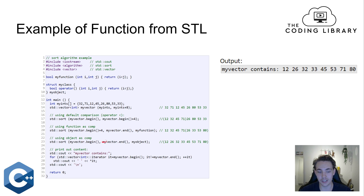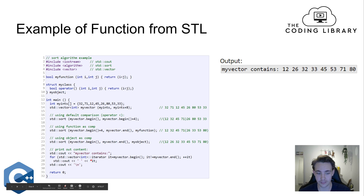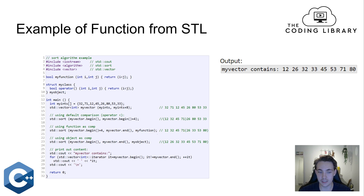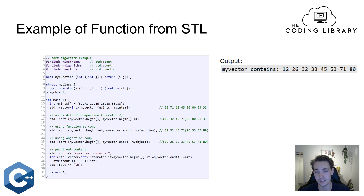If you just call sort with my_vector.begin() and my_vector.end(), it will by default sort in ascending order. Then we can print the contents using iterators pointing to all elements in the vector. We first have an unsorted vector, then apply the sort, and we get all elements sorted — now we have a sorted vector we can use in algorithms and data structures. I'll also show this example in code.